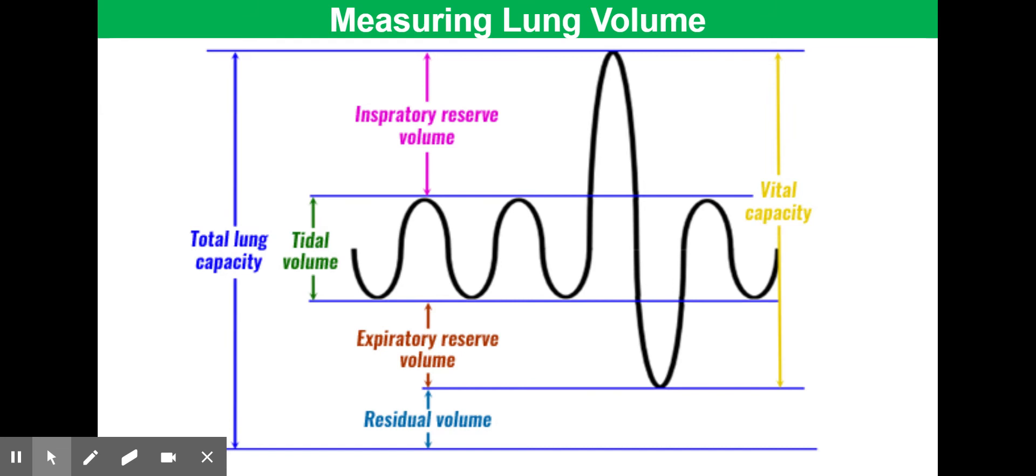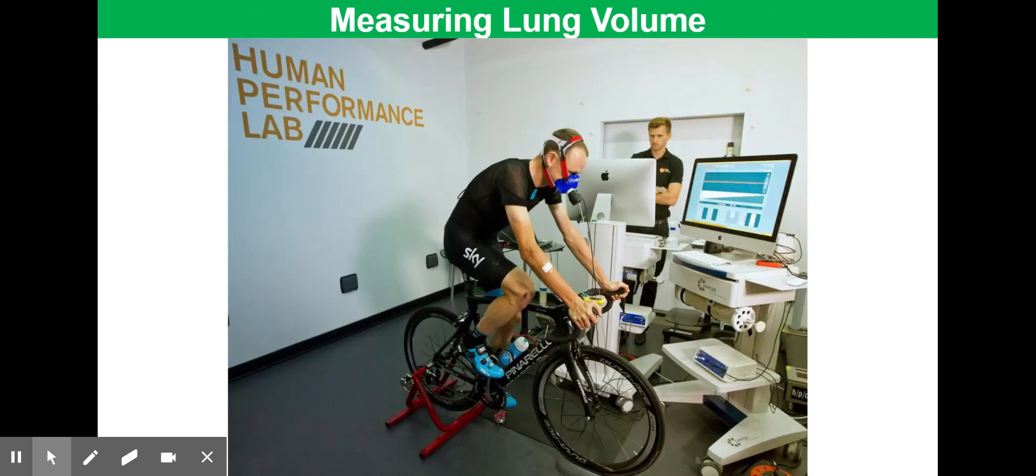Vital capacity is usually in the region of 2.5 to 5 decimetre cubed. But in trained athletes such as Chris Froome, who's now shown on the slide in front of you, it can be significantly greater than that. Chris Froome's vital capacity is larger than 5 decimetre cubed.